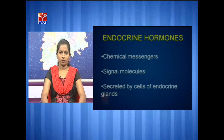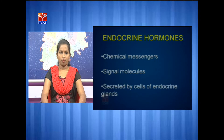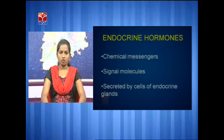Hormones are chemical messengers and signal molecules which are secreted by the cells of endocrine glands. The release of hormones in a human body is in very tiny amounts. Too much or too little release of a hormone causes deficiencies and diseases. Hormones enter the bloodstream and pass throughout the body, but they show their action only at a particular site called the target organ, due to the presence of surface receptors.